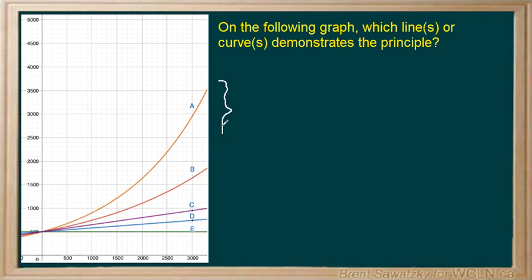These two we can see that the increased rate of growth, in other words a curve going up, so those would make us think of compound interest. And these two are just linear and they would make us think of simple interest, they're just rising gradually.